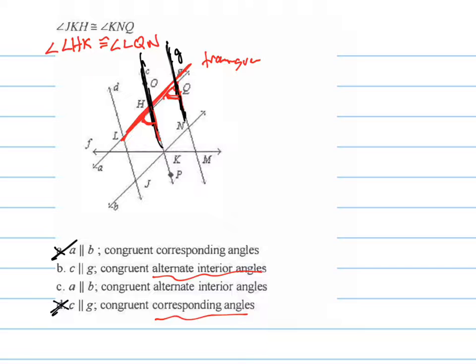They're both on the same side of that transversal, so they're not alternate. And they are what are called corresponding.